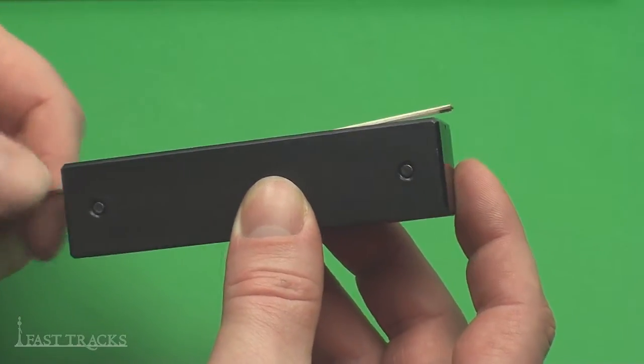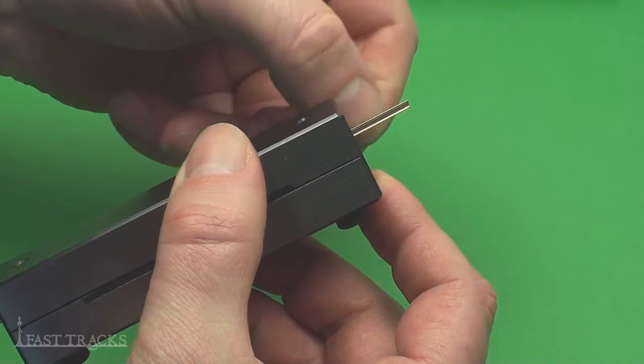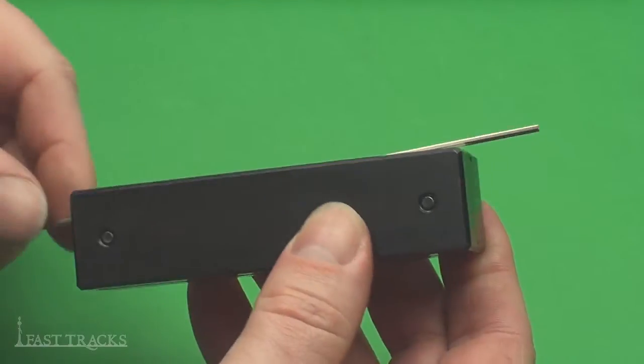So where I put it, if you take a look at this inside face of this rail here, this is the head of the rail up here, I want that face to just touch the side of the tool.